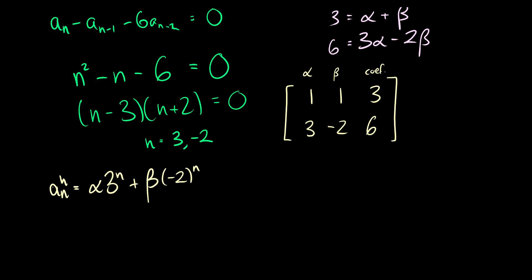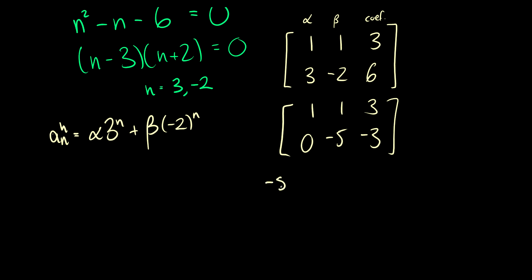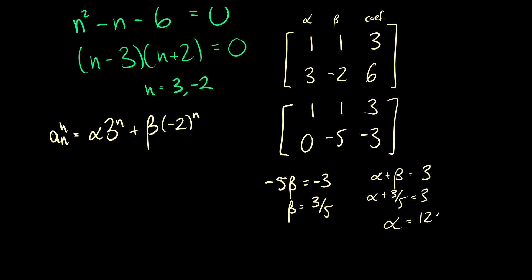We subtract 3 times the first row from the second row: 3 − 3 = 0, −2 − 3 = −5, and 6 − 9 = −3. So −5·beta = −3, giving beta = 3/5. Then from alpha + beta = 3, alpha + 3/5 = 3, so alpha = 12/5. Substituting back: a_n = (12/5)·3^n + (3/5)·(−2)^n.